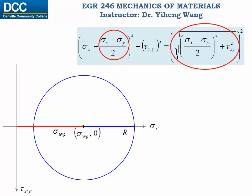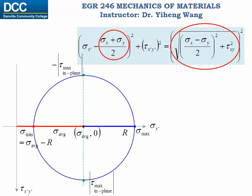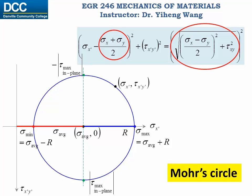On this circle we can visualize the absolute maximum in-plane shear stress, which simply equals to the radius of the circle, with negative here and positive here. This point corresponds to the mathematic minimum of normal stress, which equals to the average normal stress minus r, or the absolute value of the maximum in-plane shear stress. And this point represents the mathematic maximum normal stress, which equals to the average normal stress plus r. For any point on this circle, its coordinates represent its state of stress. Therefore this circle can be used to represent any state of stress associated with any orientation of this planar element. This circle is known as Mohr's circle, named after the German engineer Christian Otto Mohr.